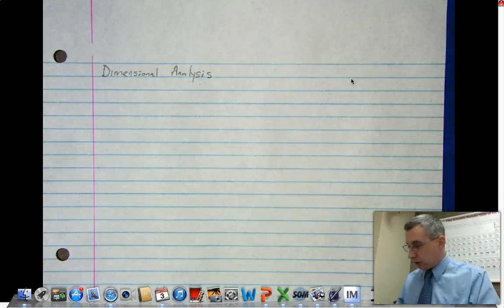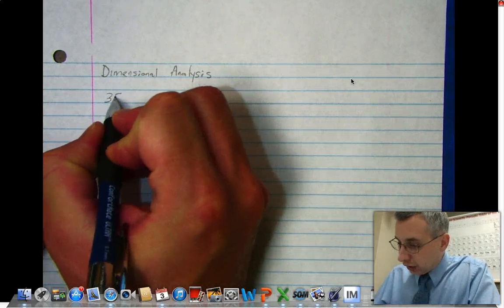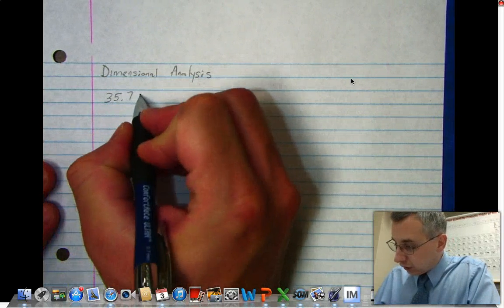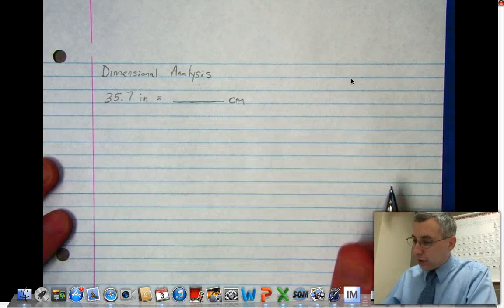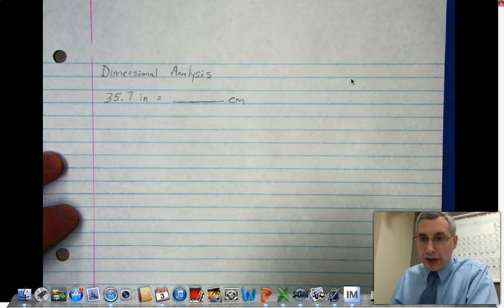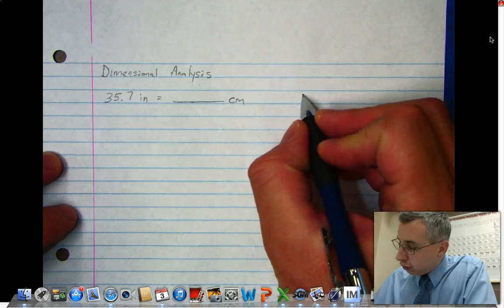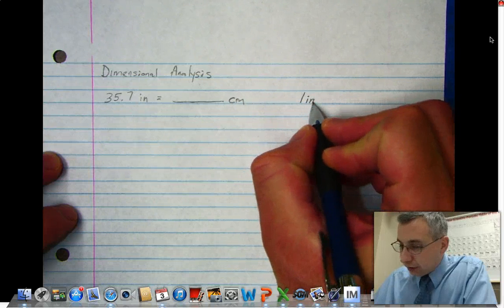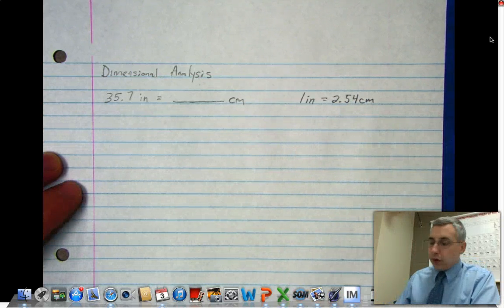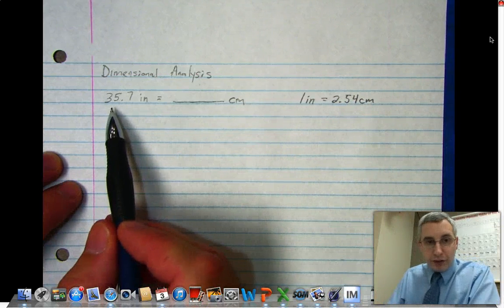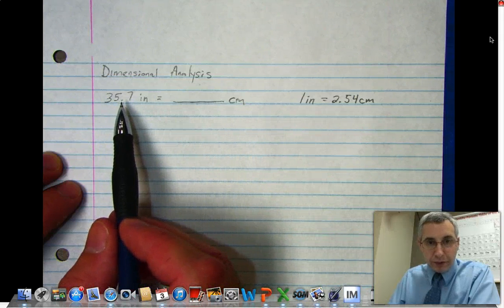Let's say you've got 35.7 inches and you need to change it into centimeters. You need some kind of equivalent statement or conversion factor, something you might have to look up or might be given to you. For example, one inch is 2.54 centimeters.